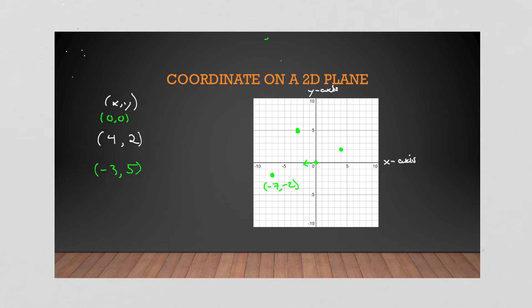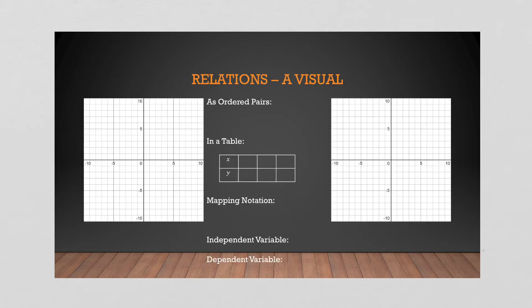Anything that exists on this two-dimensional plane is called a relation. It is a relationship between an X coordinate and a Y coordinate. Obviously it goes a little bit deeper than that, but that is its most basic. We can map relations in a number of different ways — basically it depends on what you have on the grid.